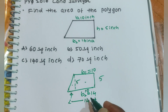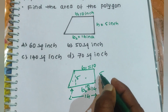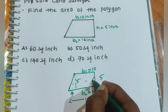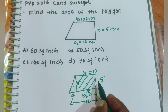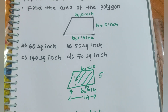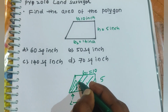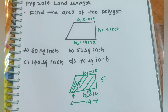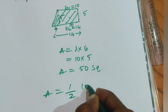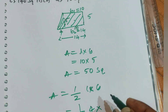Area of the rectangle equals length × breadth = 10 × 5 = 50 square inches. For each triangle on the side, area = half × base × height = half × 2 × 5. Two triangles combined give an area of 10 square inches.